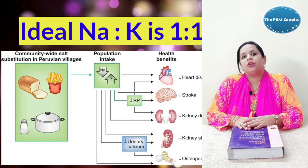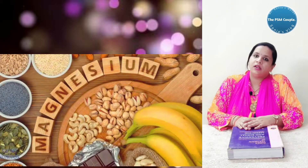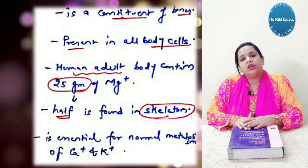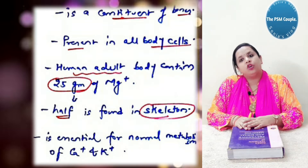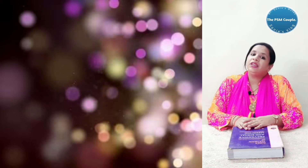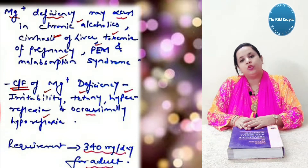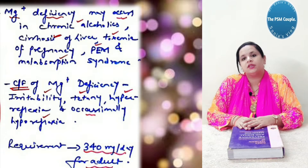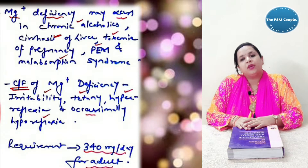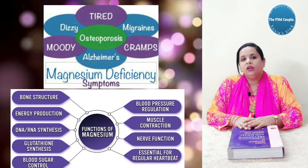Magnesium is a constituent of bones and is present in all body cells. The adult human body contains 25 grams of magnesium, of which half is found in the skeleton. It is essential for normal metabolism of calcium and potassium. Magnesium deficiency may occur in chronic alcoholics, cirrhosis of liver, toxemia of pregnancy, protein energy malnutrition, and malabsorption syndrome. Clinical features of magnesium deficiency include irritability, tetany, hyperreflexia and occasionally hyporeflexia. The requirement is 340 mg per day for an adult.